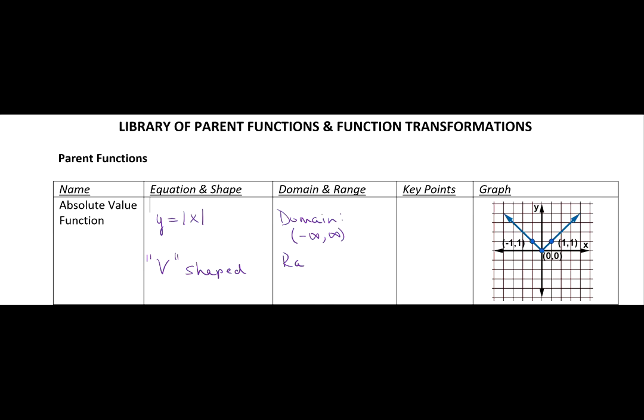What's its range? Remember, the absolute value is the distance from zero. A distance can be nothing if you're at zero, or any positive value. So its range is zero inclusive to infinity.